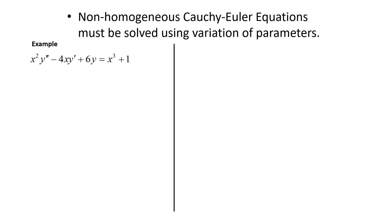We've solved several homogeneous Cauchy-Euler equations. For a non-homogeneous Cauchy-Euler equation you need to use variation of parameters. Our next example is x²y'' - 4xy' + 6y = x³ + 1.